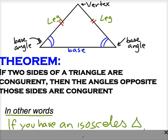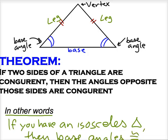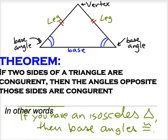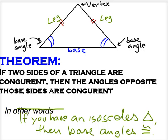In other words, if you have an isosceles triangle, then the base angles are always congruent. We can use that to solve some problems.